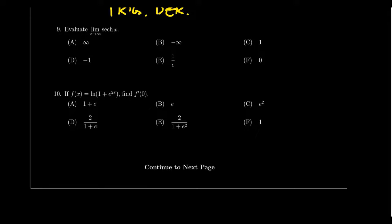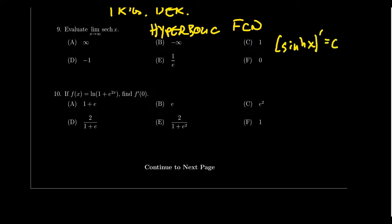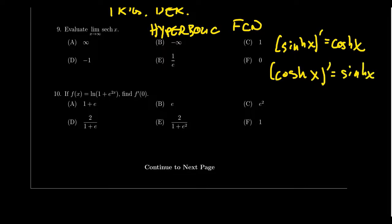Question number nine will ask you something about hyperbolic functions — it could be a limit, an evaluation, or most likely the derivative of a hyperbolic function. It's important to remember that the derivative of sinh is cosh, and the derivative of cosh is sinh. The other four — hyperbolic tangent, cotangent, secant, and cosecant — can have their derivatives calculated using the quotient rule with these two observations. It's probably best to memorize them or put them on an approved note card.